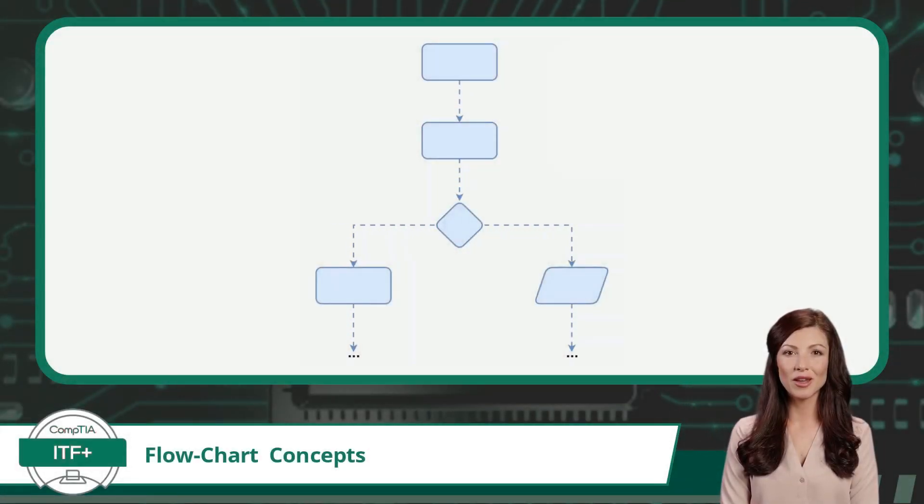Think of a programming flowchart as your trusty map. It's a visual representation of the steps and decisions your program will make. Just as a real map helps you find your way, a flowchart guides your program's actions, ensuring it follows the correct sequence.